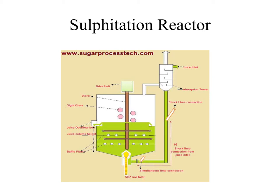This is a typical diagram of the sulfitation reactor. In the sulfitation process, clarification involves the addition of sulfur dioxide along with liming. The sulfitation reactor is made of stainless steel in order to avoid corrosion due to the acidic nature of sulfur dioxide gas. As shown in the picture, the reactor is connected to a liming inlet from where lime is continuously added into the reactor.